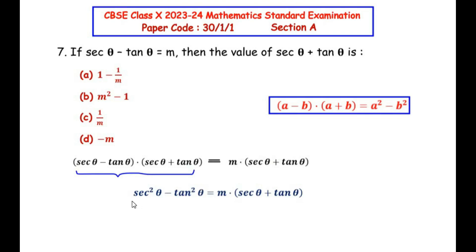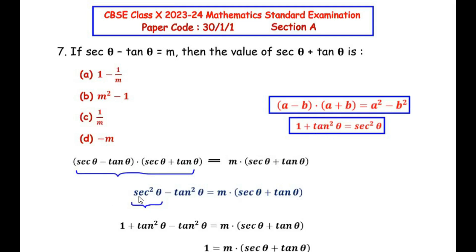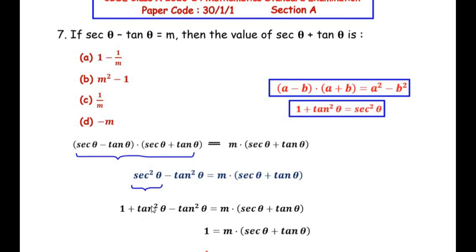We now use the trigonometric identity sec²θ = 1 + tan²θ. Replacing sec²θ on the left-hand side gives (1 + tan²θ) - tan²θ = m(sec θ + tan θ). The +tan²θ and -tan²θ cancel, leaving 1 on the left-hand side.